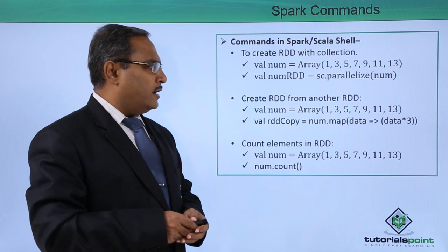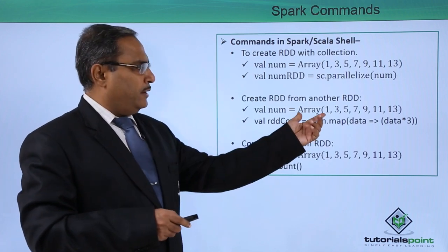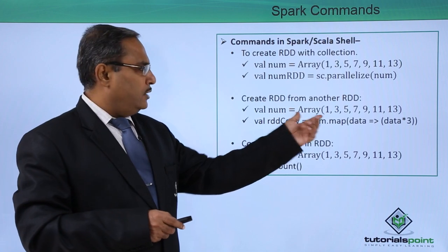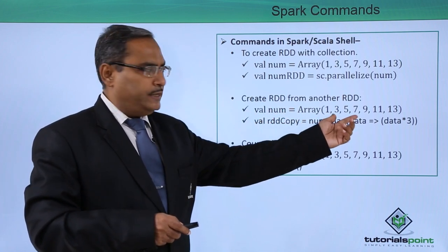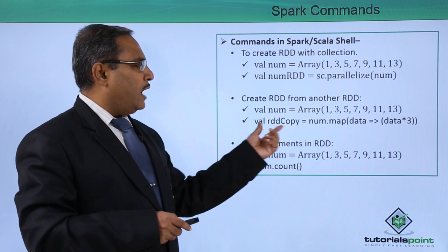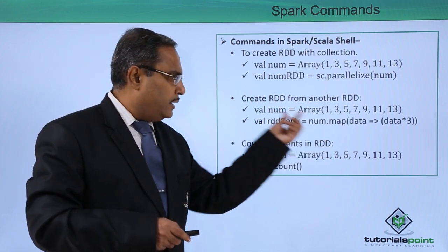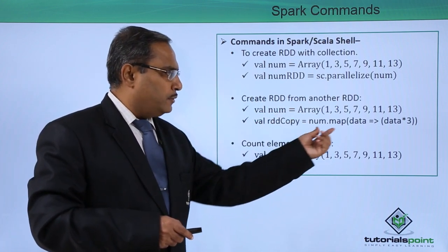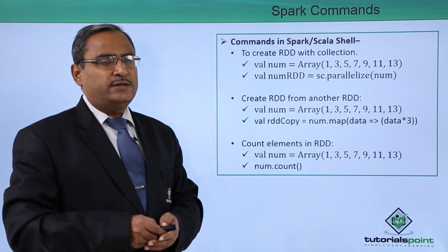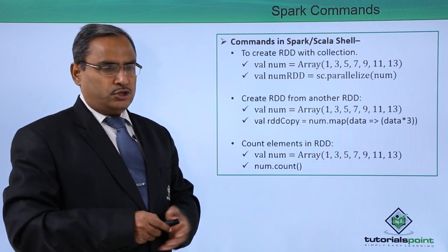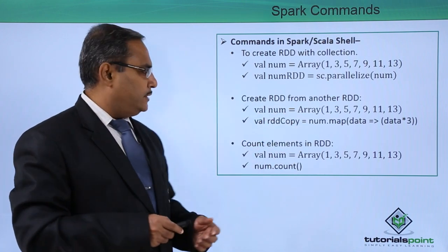To create an RDD from another RDD, define an array: val num = Array(...). Then val rddCopy = num.map(data => data * 3). In this way we can create one RDD from another RDD.